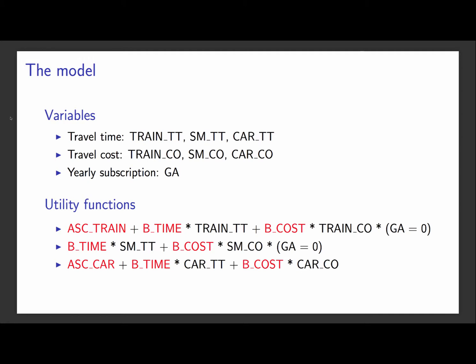We consider very simple utility functions where the utility of each alternative is simply a linear combination of the two variables, travel time and travel cost. We have also included alternative specific constants for all alternatives except SwissMetro. In the specification shown here, the parameters in red must be estimated from data.